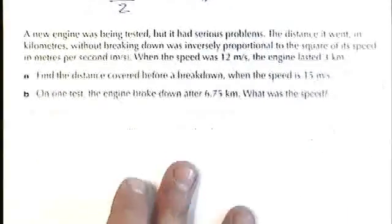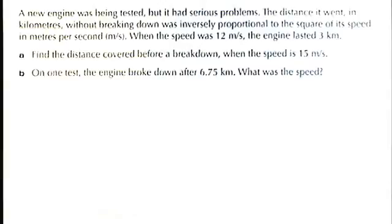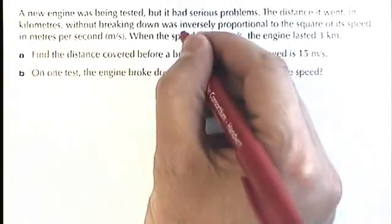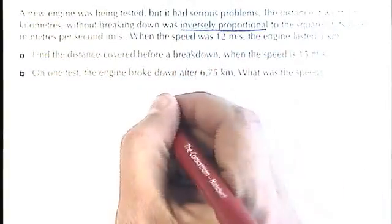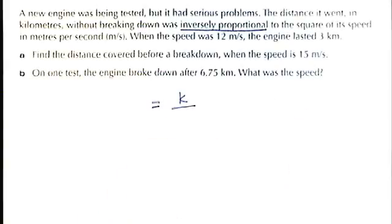OK, let's have a look at this question now. A new engine is being tested, but it had serious problems. The distance it went in kilometers without breaking down was inversely proportional to the square of its speed. So when we're doing this, we have to look. First of all, we've got the inverse proportion. So we know it's going to be equals K over something. Right? Let's try and find out what that formula is going to be.